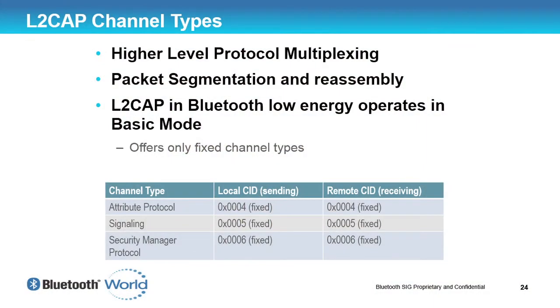In terms of L2CAP, it is the multiplexing layer for Bluetooth for both basic rate and low energy. It performs a very simple job of packet segmentation and reassembly. The radios have a variable length of packets they can send — in low energy, up to 27 bytes per packet; in basic rate, somewhere between 17 bytes and 1,023 bytes. L2CAP manages how large packets are sent over that medium.